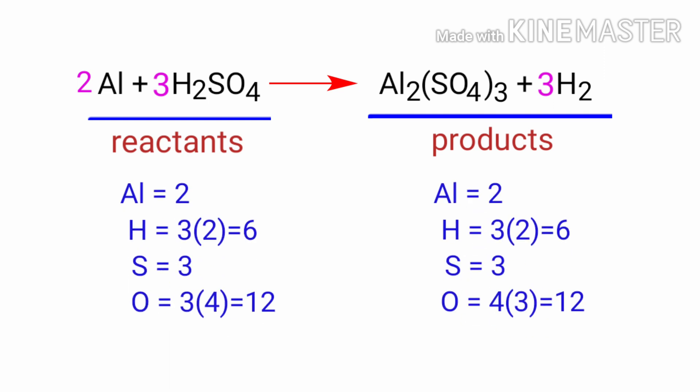The equation is now balanced. There are two Aluminium atoms, six Hydrogen atoms, three Sulphur atoms and twelve Oxide atoms on both sides.